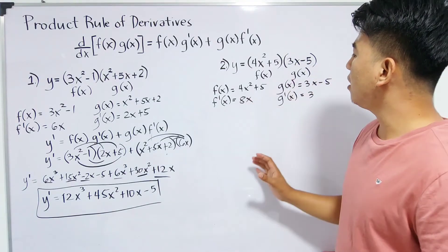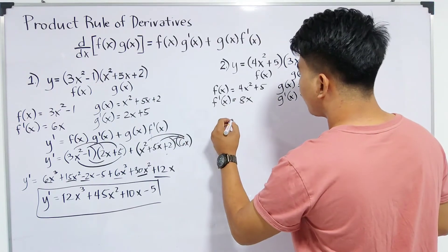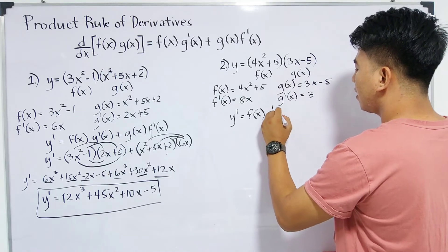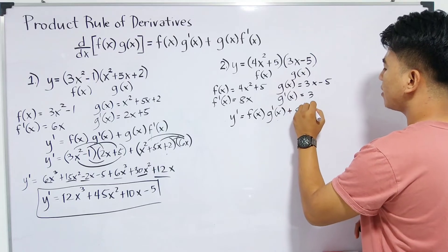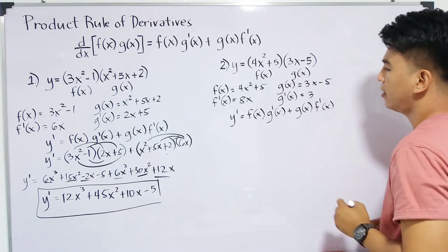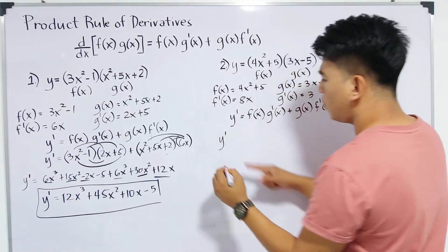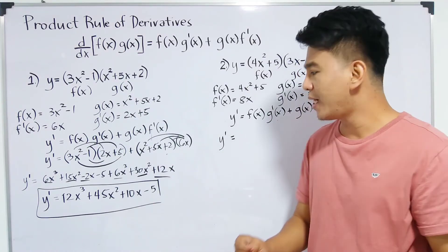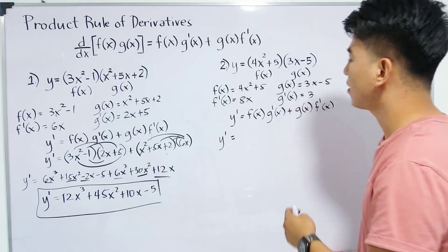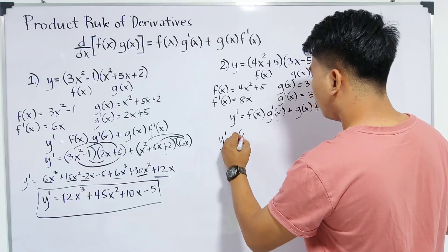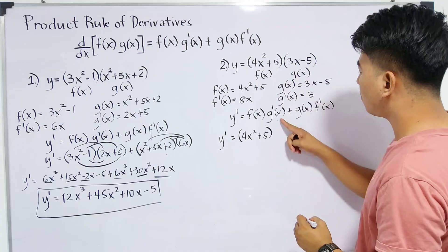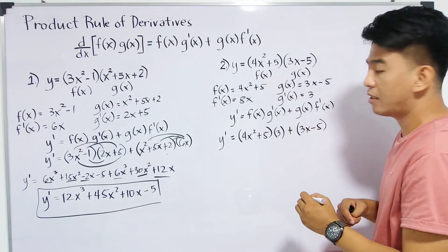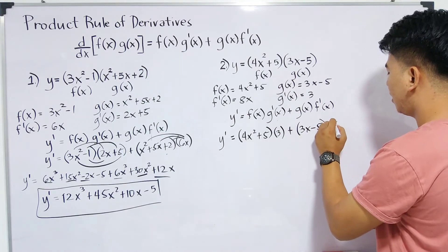We already have f prime of x and g prime of x. Let us proceed with the formula. So, y prime is equal to f of x times g prime of x, plus g of x times f prime of x. f of x is equal to 4x squared plus 5, and g prime of x is 3. Your g of x is 3x minus 5, and f prime of x is 8x. Remember to always write y prime and keep your equation complete.